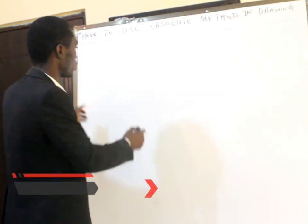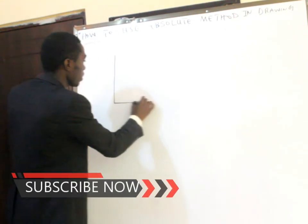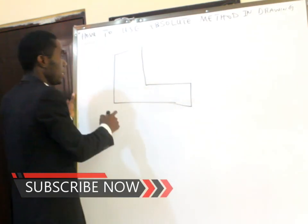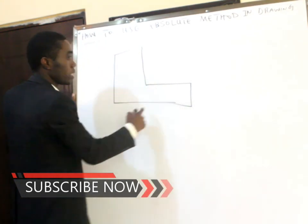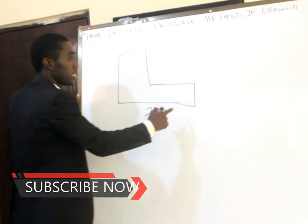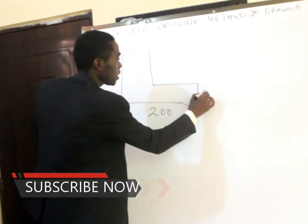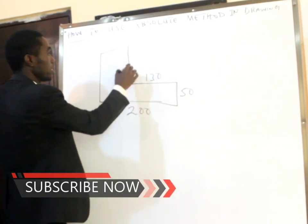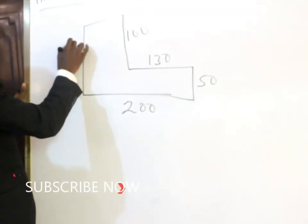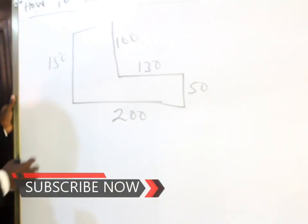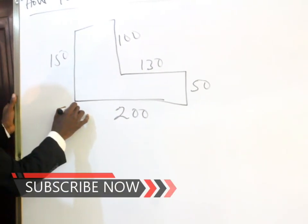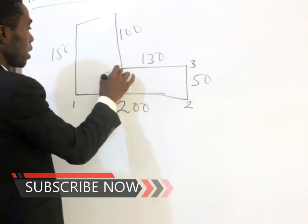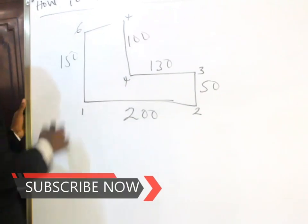Let's increase the shape to an L shape. The distance from here to here is 200 mm. The distance here is 50 mm. This side is 130, 100, 150. Our starting point is here — point 1, 2, 3, 4, 5, 6.